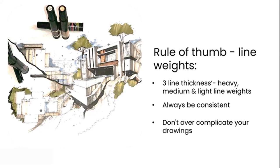Rule of thumb with line weights: stick to three — heavy, medium, and light. Always be consistent: use them for the same elements across all your drawings — for example, your wall would always be your 0.5mm thickness in all drawings. And thirdly, don't overcomplicate your drawings — keep them simple. Line weight thicknesses are part art, part personal preference, and part company standards. These line weights will be covered again in module three.